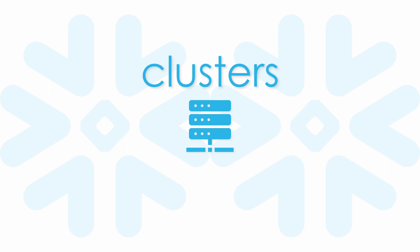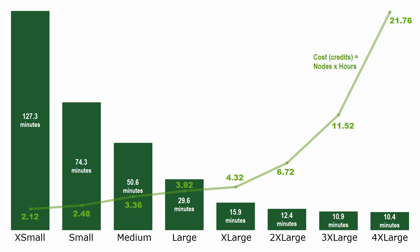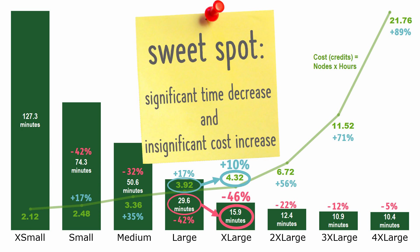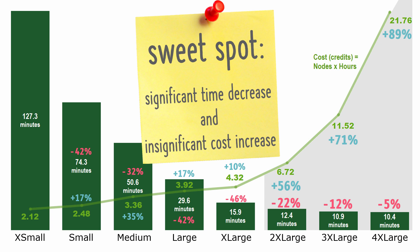Now we'll look at some other cluster considerations. I ran the exact same query on different sized clusters to see how size affects speed and cost. Going from an extra-small to a small cluster decreased run time by 42% and increased cost by only 17%. I hit the sweet spot when I ran on an extra-large cluster, because run time was almost cut in half but cost went up only 10%. Using even larger clusters for this query proved to be cost ineffective.